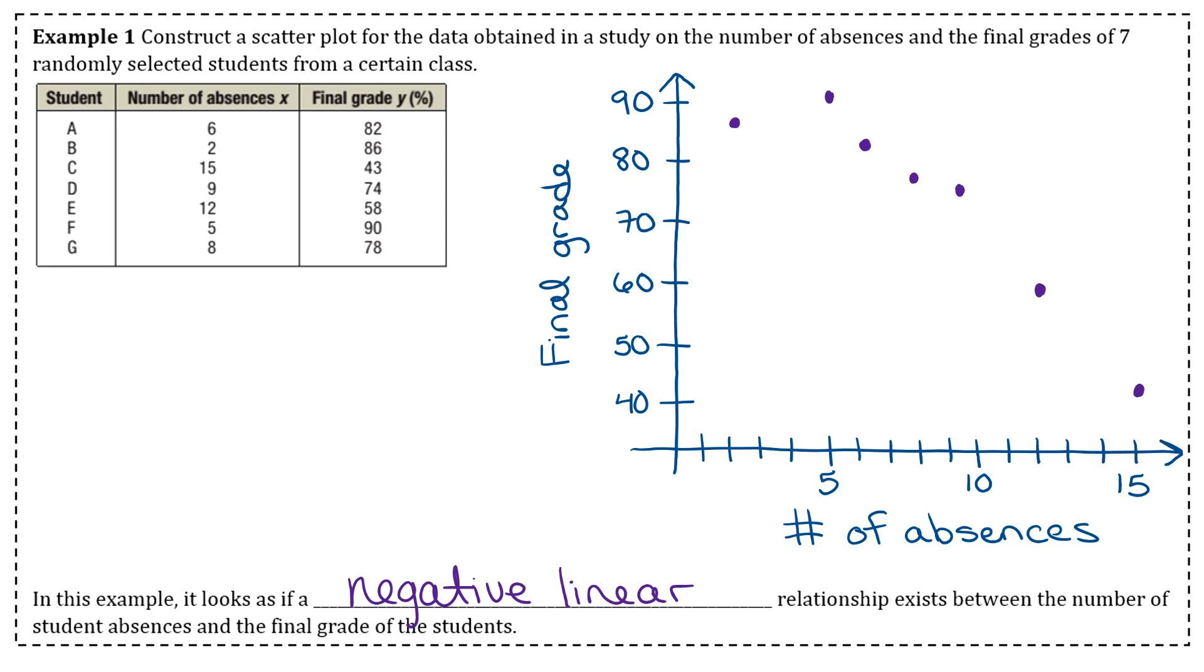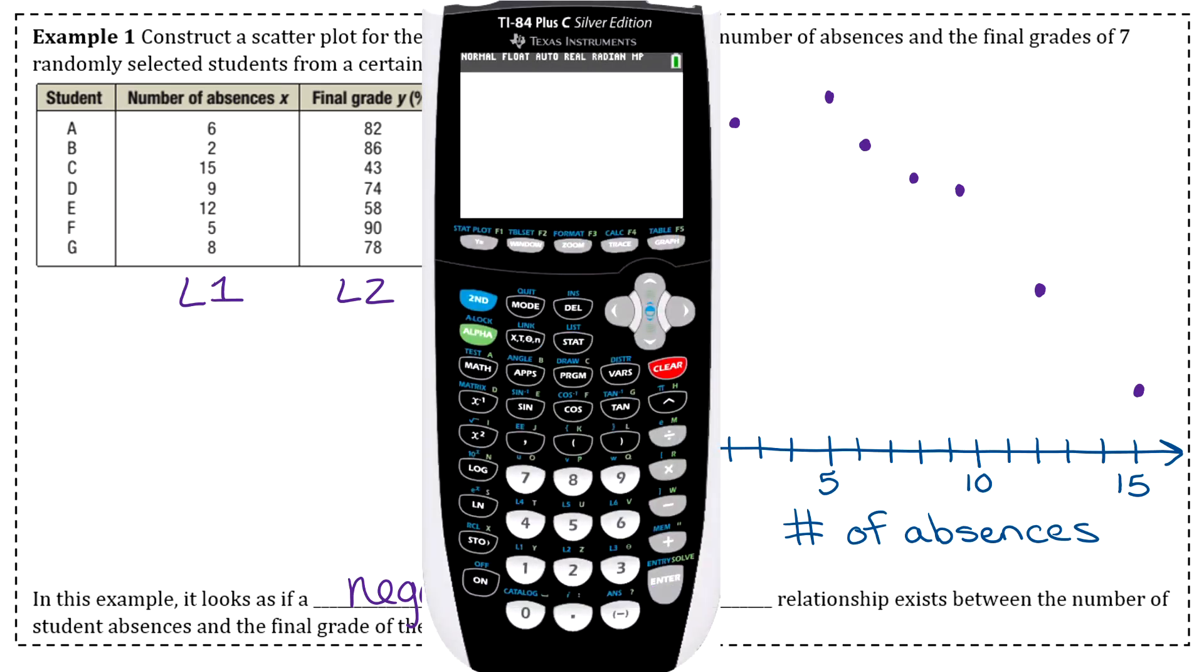This was easy to do by hand with only seven data points and reasonable numbers. In the real world, you'll have large data sets with less nice numbers, so you don't want to plot them by hand. That's where technology helps. I'll show you how to do it in your graphing calculator. Put the X column (number of absences) into L1 and your final grades (the Y's) into L2. Go to your list, clear out what you have, and enter the data.